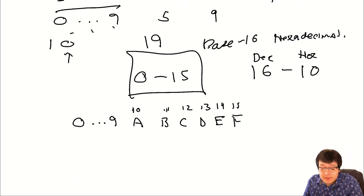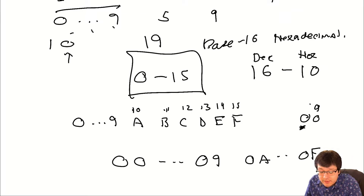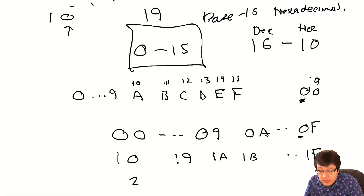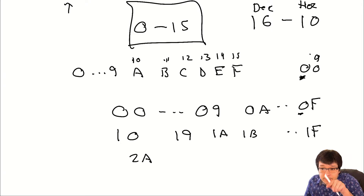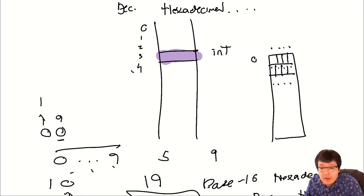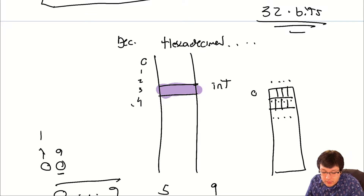In hex you count: 00, 01... 09, 0A, 0B... 0F, then 10, 11... 1F, then 20, and so on. These addresses are kept in hexadecimal, so when you ask the computer to print where you're physically storing information, it prints it in hexadecimal. When we start running code you'll see that. Typically when it's hexadecimal you will see '0x' in front of an address as a signal that the number is in hex.